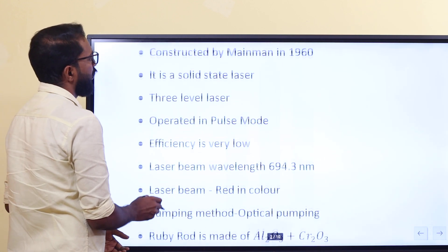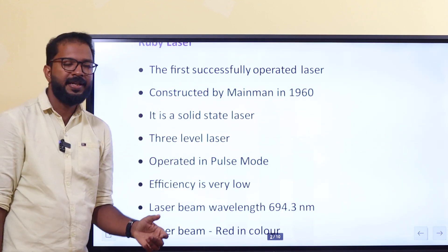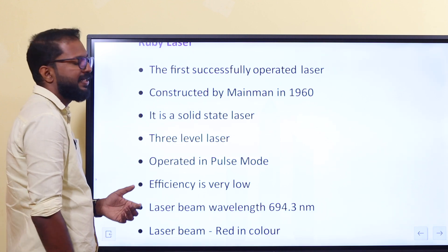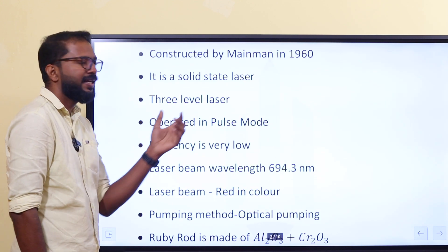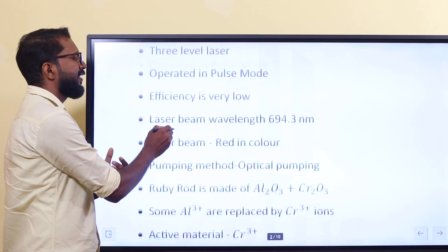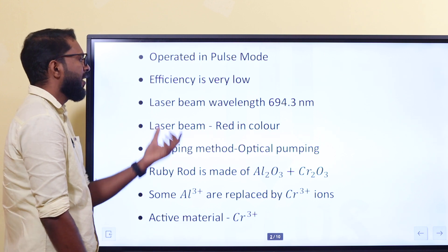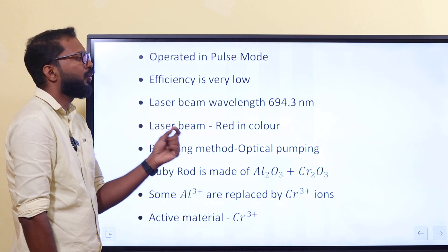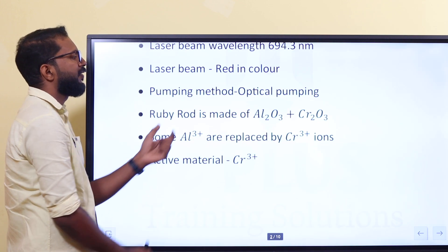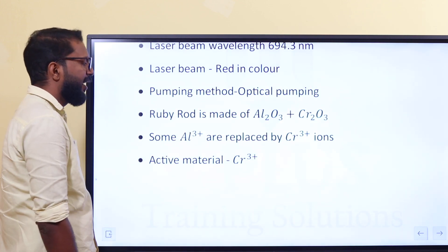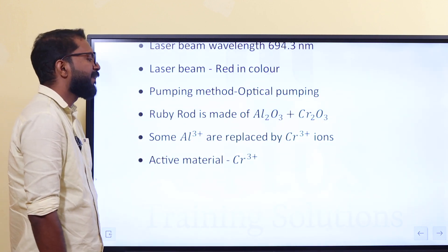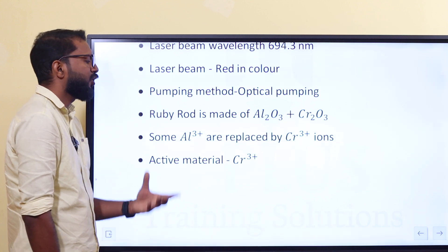To refresh: the first successfully operated laser is the ruby laser, constructed by Maiman. It is a solid state, three-level laser. It operates in pulse mode. Efficiency is very low. Laser beam wavelength is 694.3 nanometers and the beam is red in color. Pumping method is optical pumping. The ruby rod is made up of Al2O3 and Cr2O3, and some Al3+ ions are replaced by Cr3+ ions as the active material.